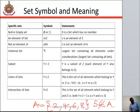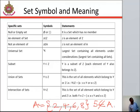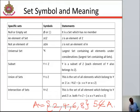Then, union of sets — that is, the set of all elements which belong to Y or Z. That is what we call union. Then the last one is intersection of a set. That is, Y intersection Z is the set of all elements which belong to both Y and Z.